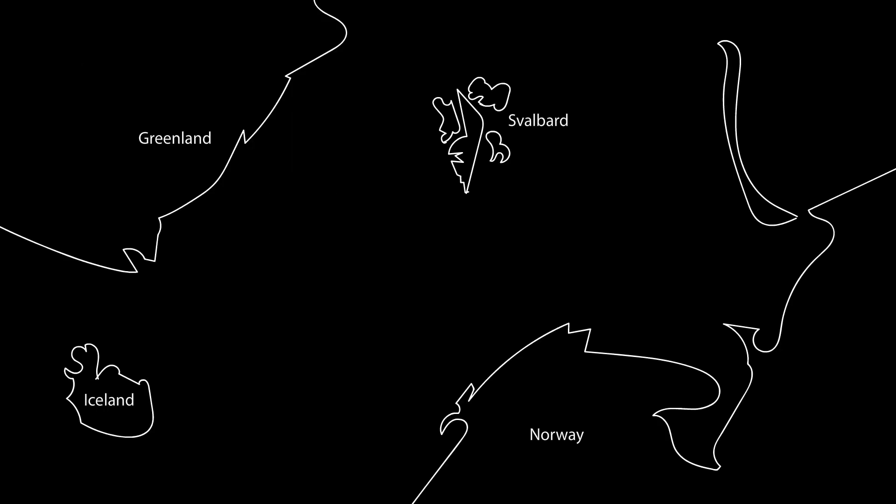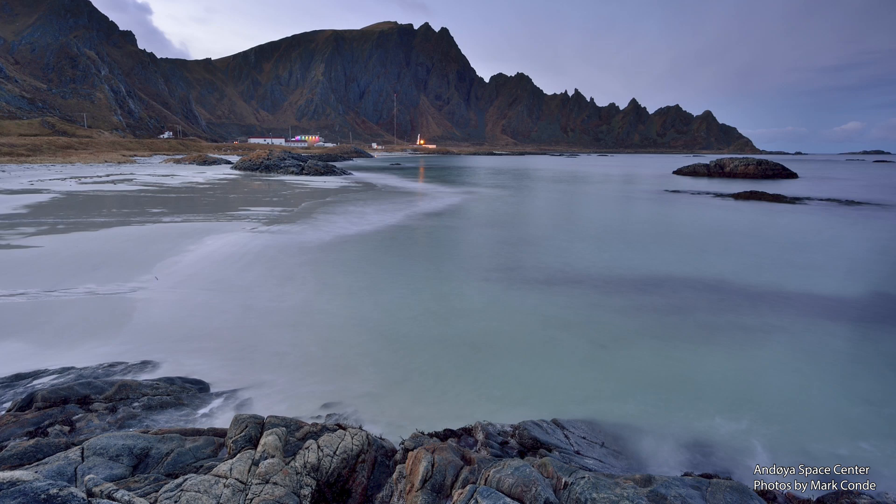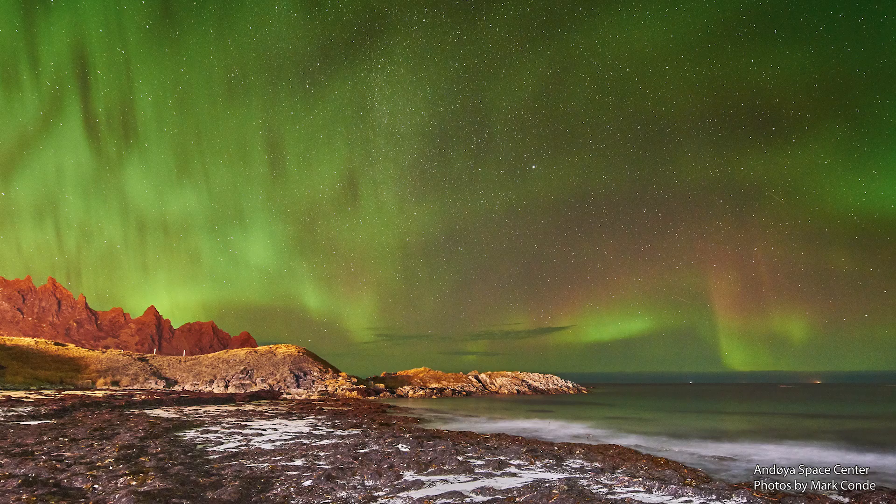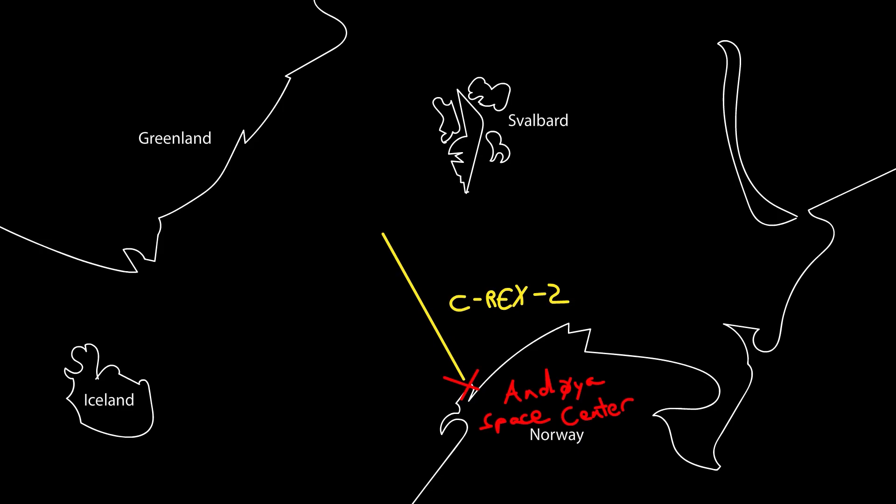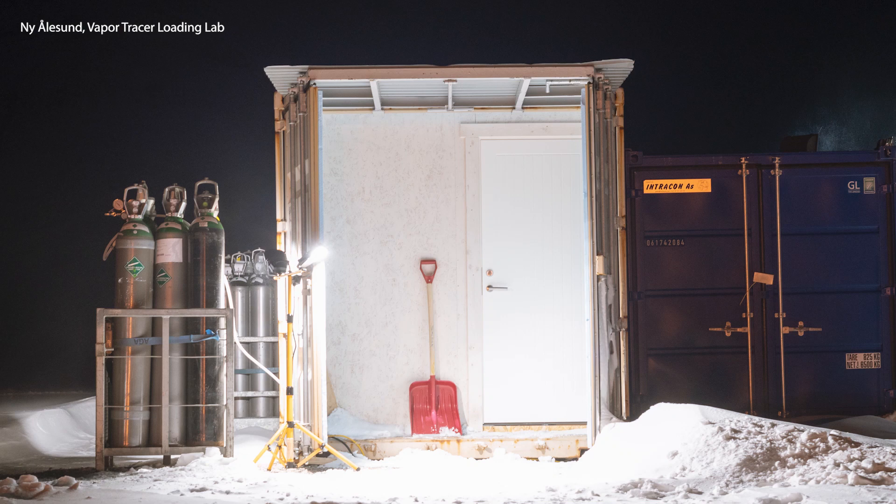Our mission setup looks like this. CREX-2 will be launched from Andoya Space Center in Norway. There we will have a NASA launch team as well as the science mission leaders watching the data and calling the shots. Clemson University's Chi rocket, also carrying a pyrotechnic tracer payload, will launch from Nyalesund on Svalbard shortly after CREX-2, weather permitting.